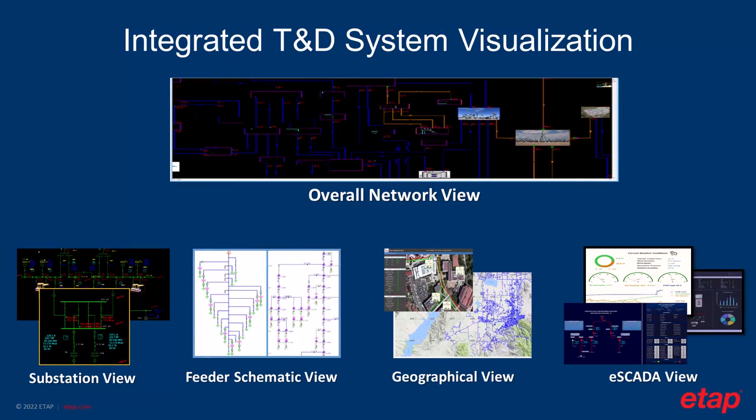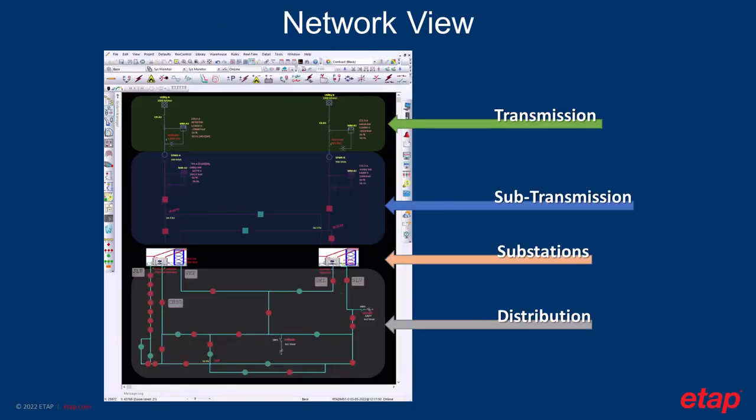Visualization of data availability is important. ETAP provides specific views that allow you to see the overall network through the network view. ETAP also provides substation, feeder, geographical, and personalized SCADA views. The network view demonstrates the entire system and is auto-generated from the GIS imported model. The view shows the transmission, sub-transmission, substations, and distribution models in an overall view.